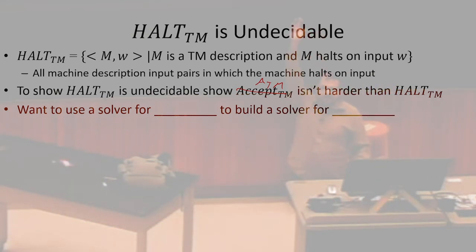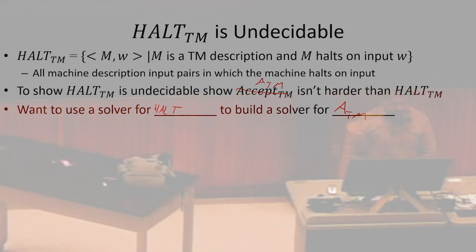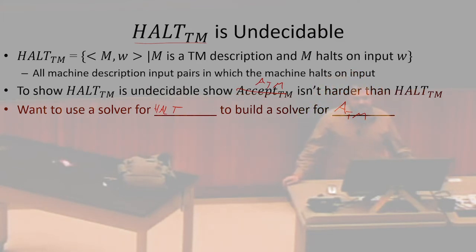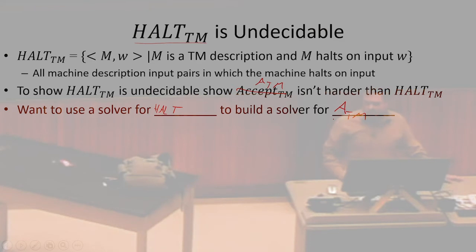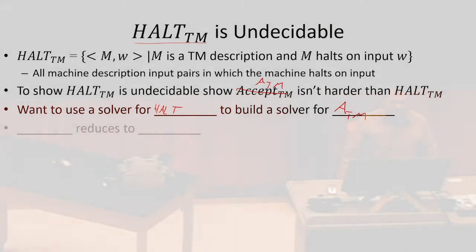We want to use a solver for HALT in order to build a solver for ATM. What we're trying to do is show HALT is undecidable — that's the thing we want to show is impossible. ATM is the thing we already knew was impossible. So we want to say: if HALT were possible, then we could use it to accomplish the impossible. Since we knew ATM was impossible, we could use a solver for HALT to build a solver for ATM — so if HALT were possible, halt must have been impossible as well.